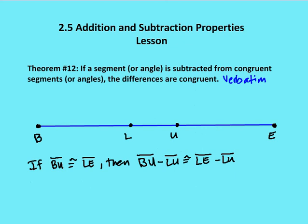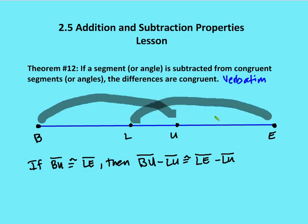Now we move on to subtraction. It's a similar process to the addition property, but now we're subtracting. So if a segment or an angle is subtracted from congruent segments or angles, then the differences are congruent. So if I have segment BU that's congruent to segment LE, and I subtract one segment from both of those, then I know that the remainders BL and UE are going to be congruent.